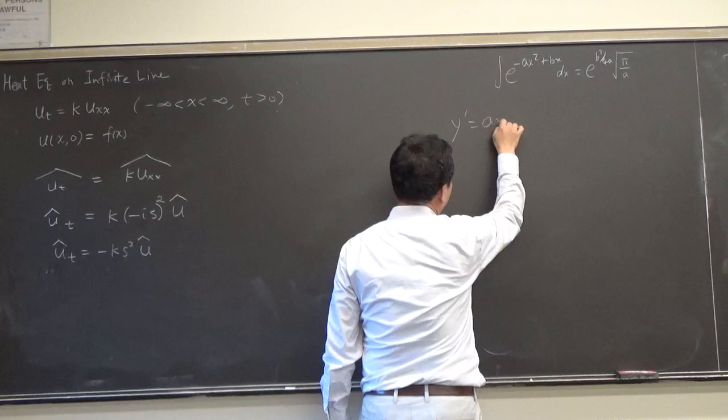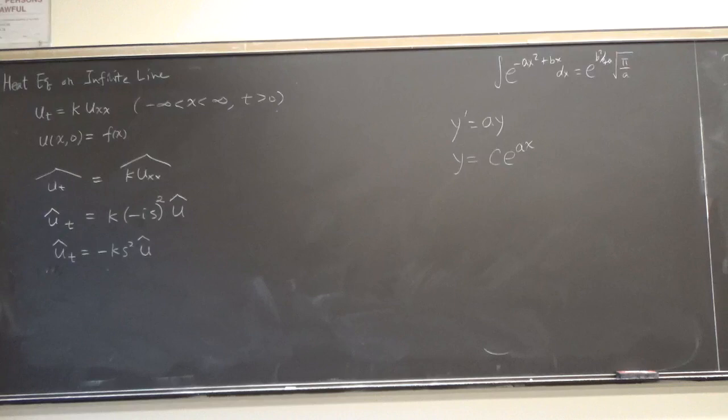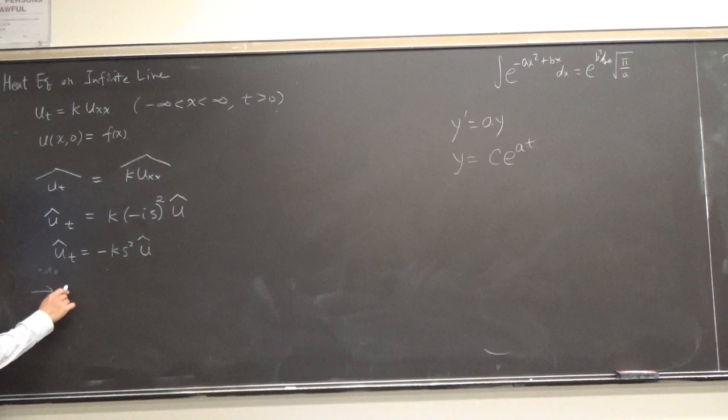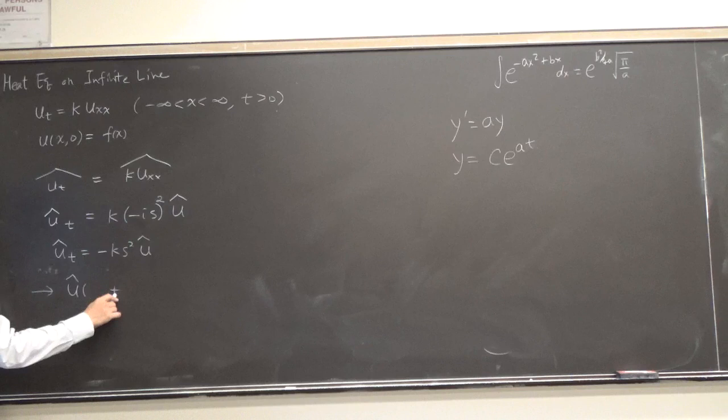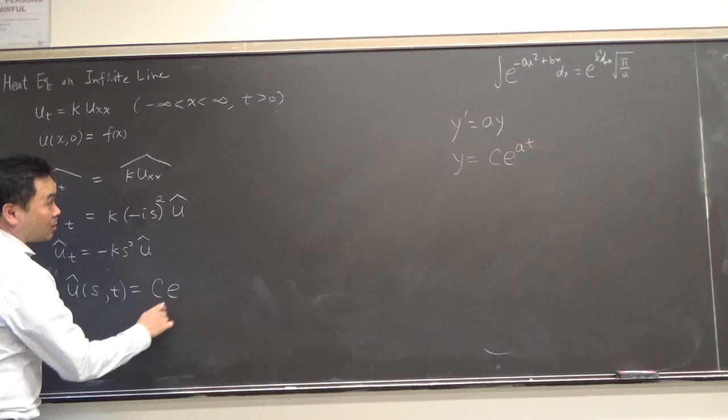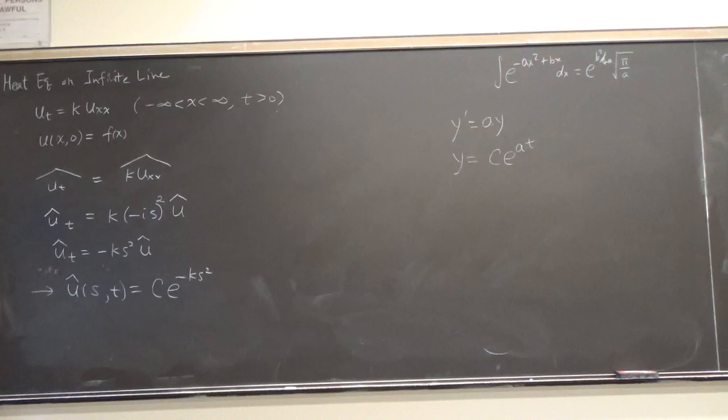We actually know how to solve y prime equals to ay. What's the solution to this? This one, right? In our case, it's the derivative with t, so let's think of it this way. So this immediately tells us that u hat, which by the way, it's still a function of t, only x is now changed to s. We'll change to some constant times e to - a is negative k s squared, and that times t.